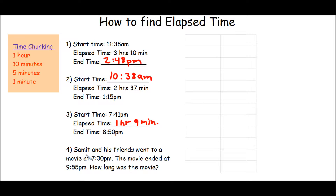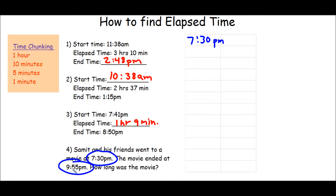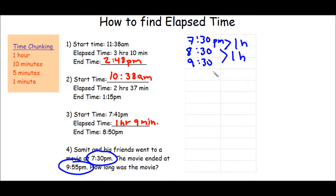Let's look at a word problem. Samet and his friends went to a movie at 7:30 PM. The movie ended at 9:55 PM. How long was the movie? We're trying to figure out how much time passed between 7:30 PM and 9:55 PM. We put our start time of 7:30 PM and add chunks. 7:30 plus 1 hour is 8:30 — that's 1 hour. 8:30 plus 1 hour is 9:30 — that's 1 hour. We can't add another hour, so let's go to 10-minute chunks.